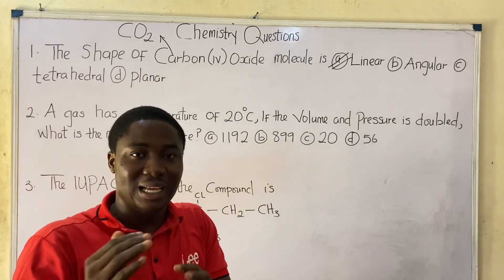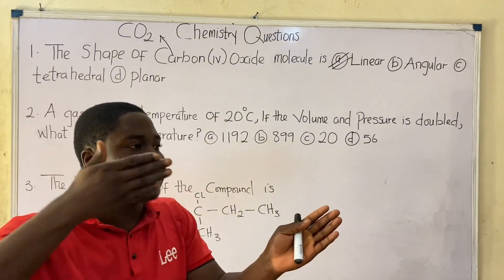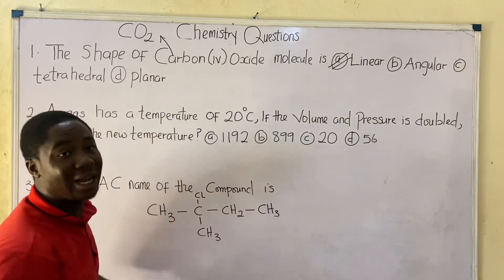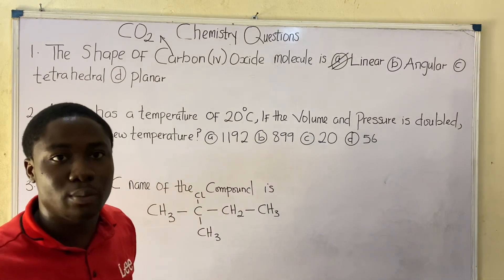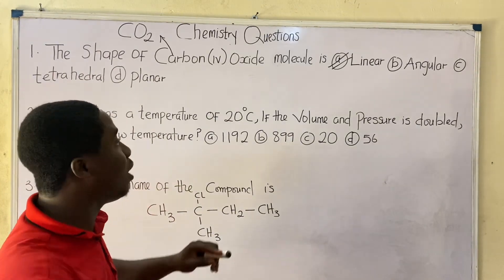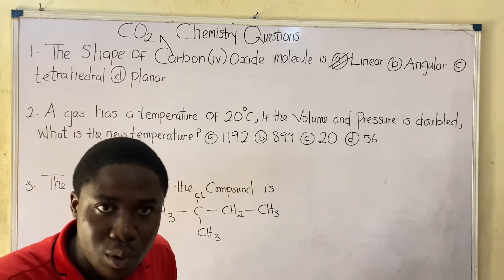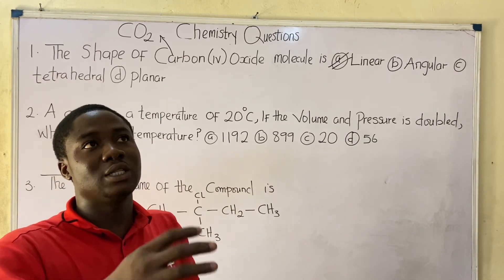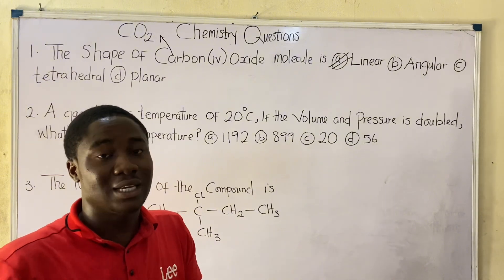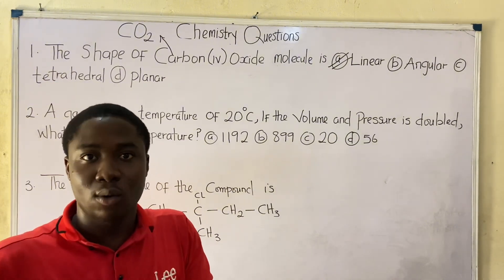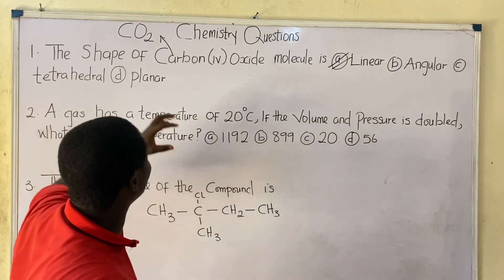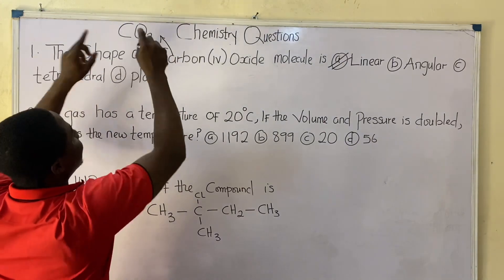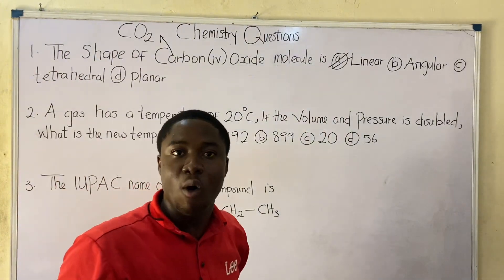For something to be linear, it means it is in a straight line. To understand why CO2 is linear, you have to understand what we call the Lewis structure. Lewis introduced the concept relating to electron pairs and other concepts in chemistry.